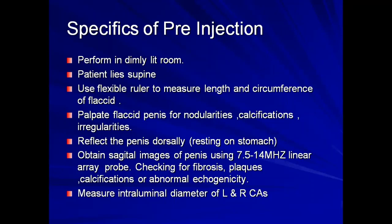There are two stages: the pre-injection phase and the post-injection phase. In the pre-injection phase, perform the exam in a dimly lit room to support the patient's psychology. The patient lies supine. Use a flexible ruler to measure the length and circumference of the flaccid penis. If trained, palpate the flaccid penis for nodularities, calcifications, and irregularities. The penis rests on the abdomen pointing upward, with the corpora cavernosa lying on the anterior abdominal wall. Obtain B-mode images, checking for fibrosis and Peyronie's disease.